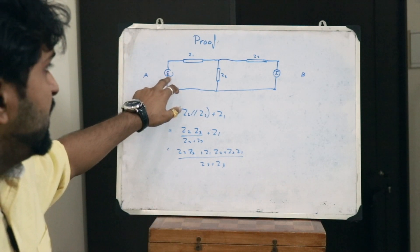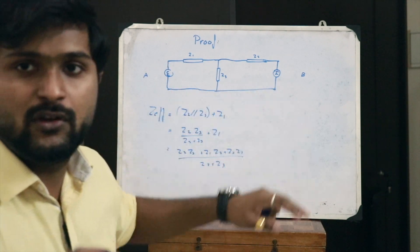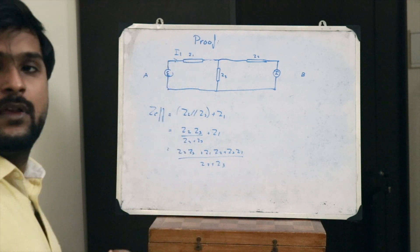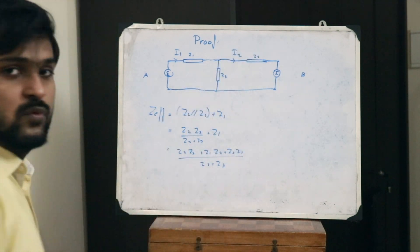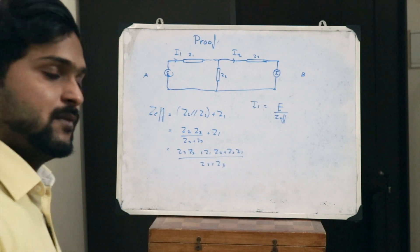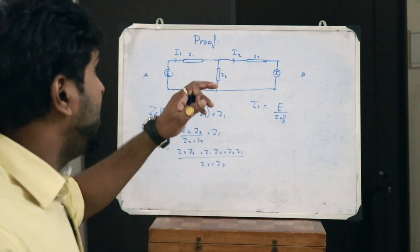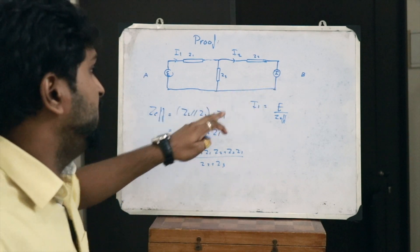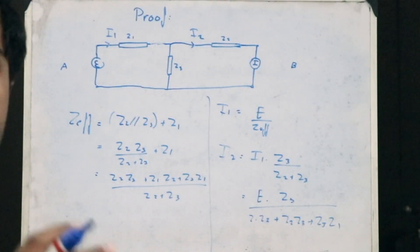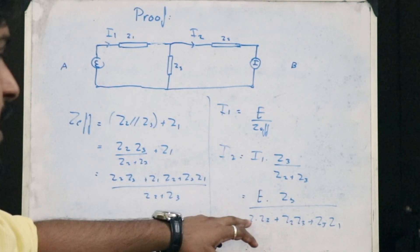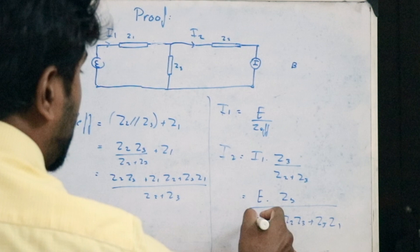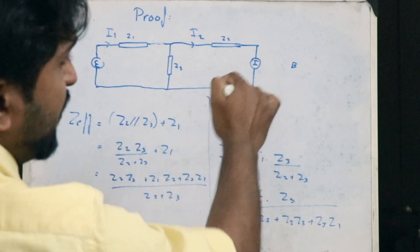That is the effective impedance when EMF is applied at terminal A and current is obtained at terminal B. Let the total current be I1 and the current at terminal B be I2. Then I1 = E / Z_eff. I2 is obtained using the current divider: I2 = I1 · Z3 / (Z2 + Z3), which finally equates to E · Z3 / (Z1·Z2 + Z2·Z3 + Z3·Z1). This is the current obtained at the terminals of antenna B.